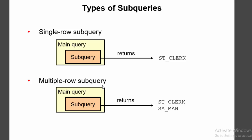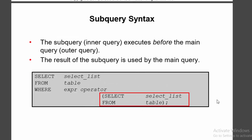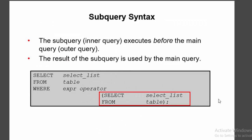The difference between single row subquery and multiple row subquery is that the single row subquery always returns only a single value, and the multiple row subquery always returns multiple values. This is the syntax for the subquery.